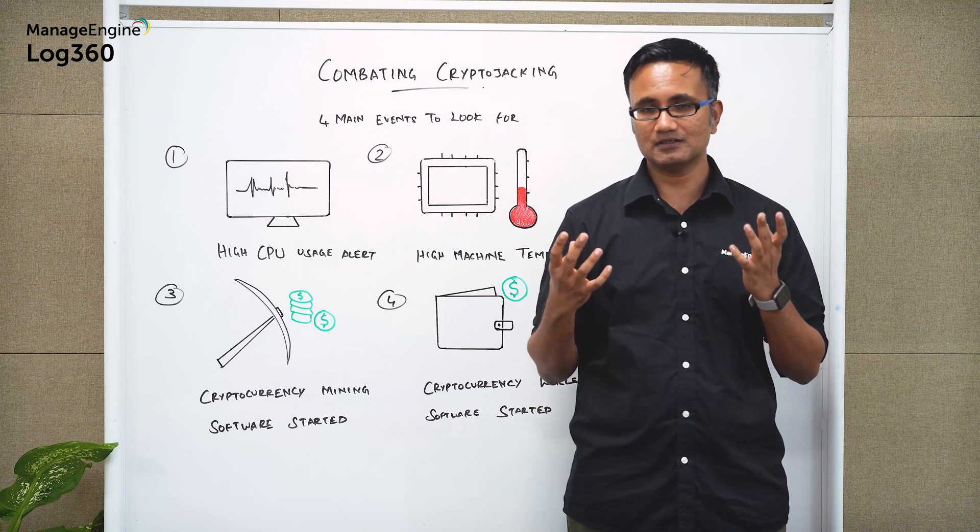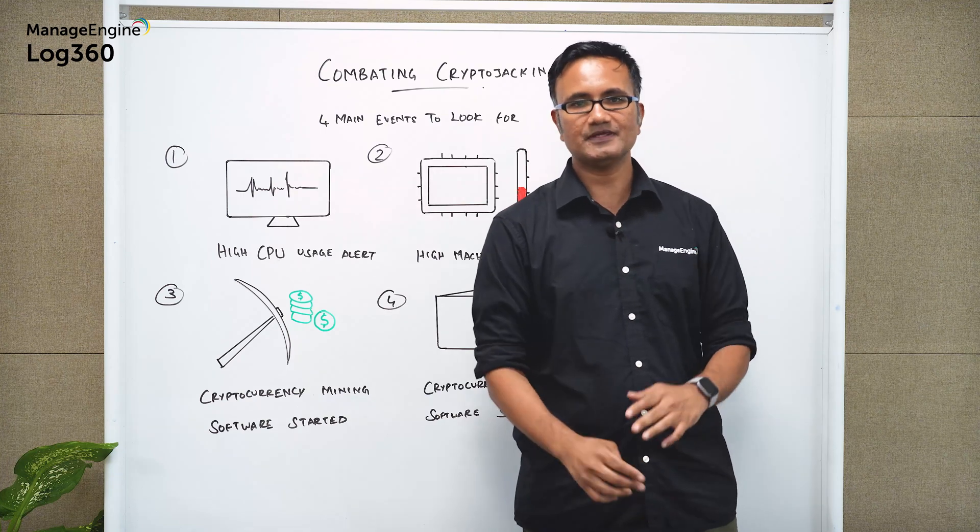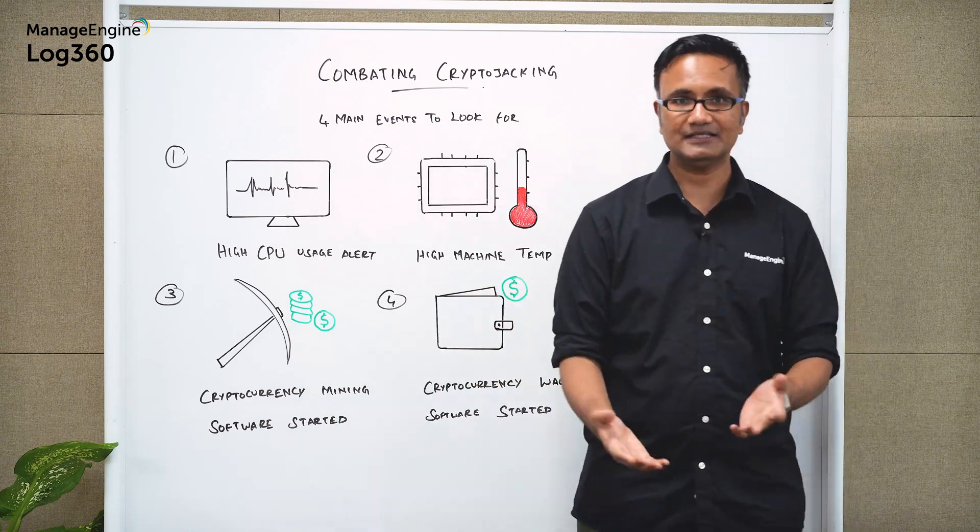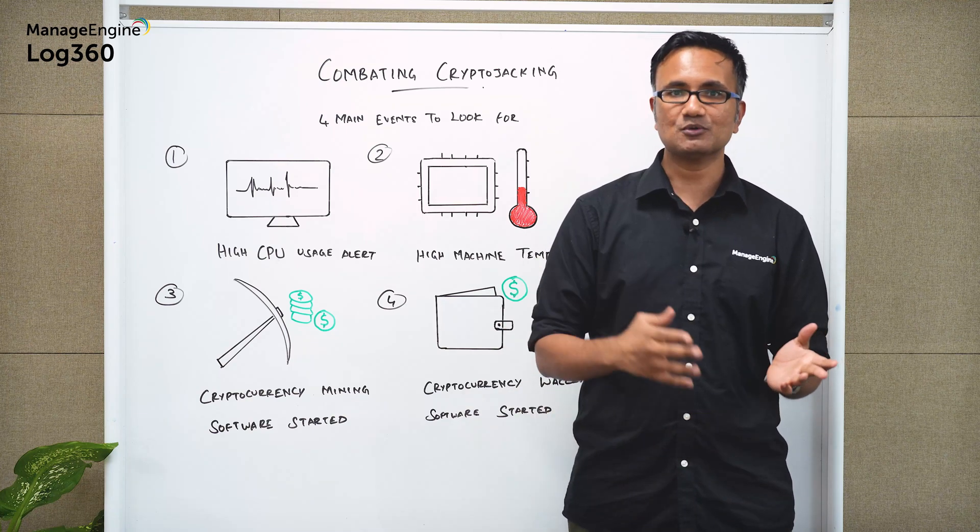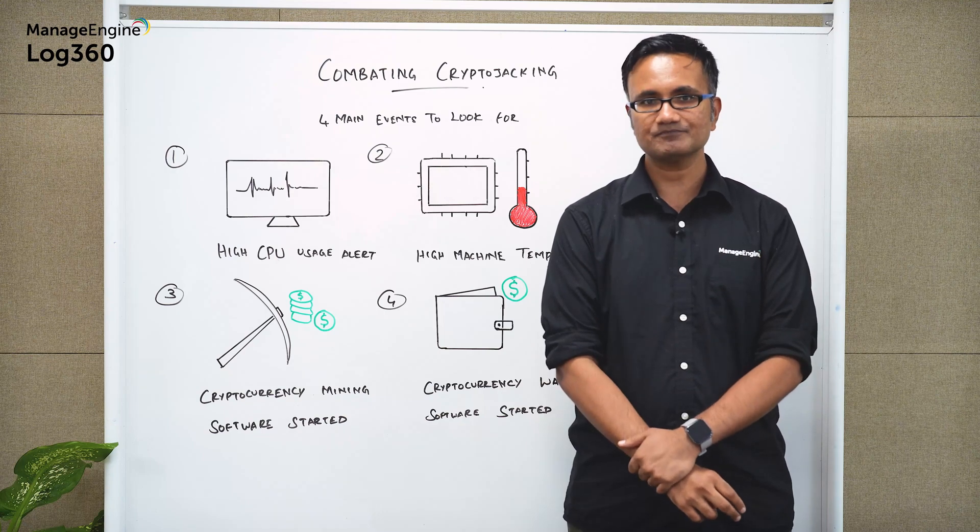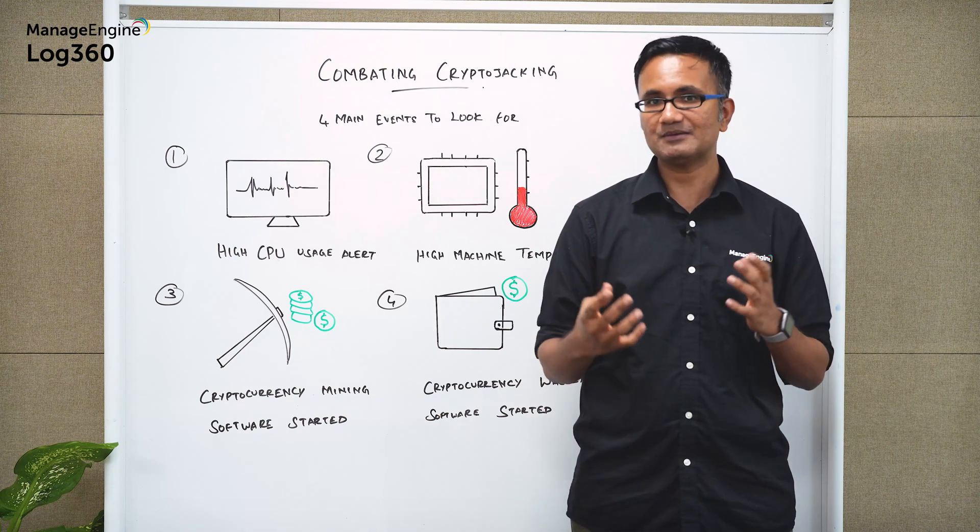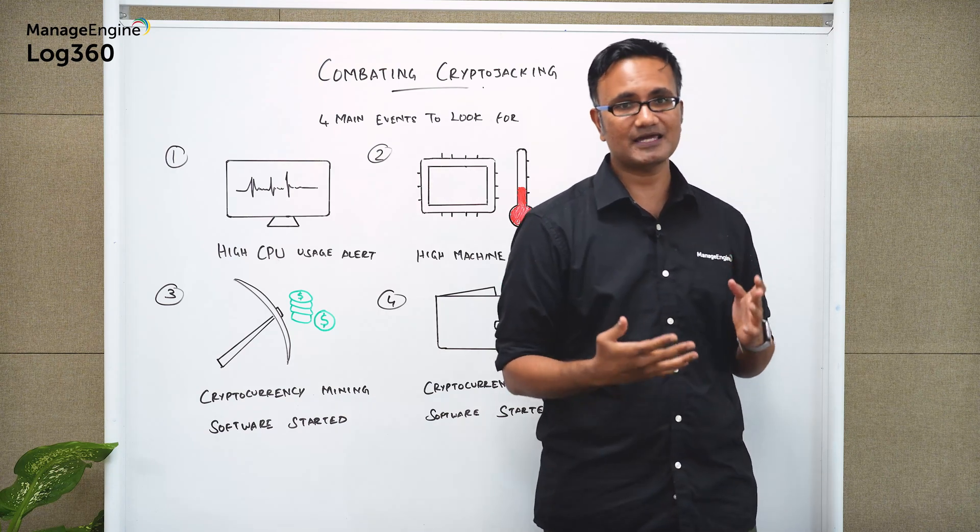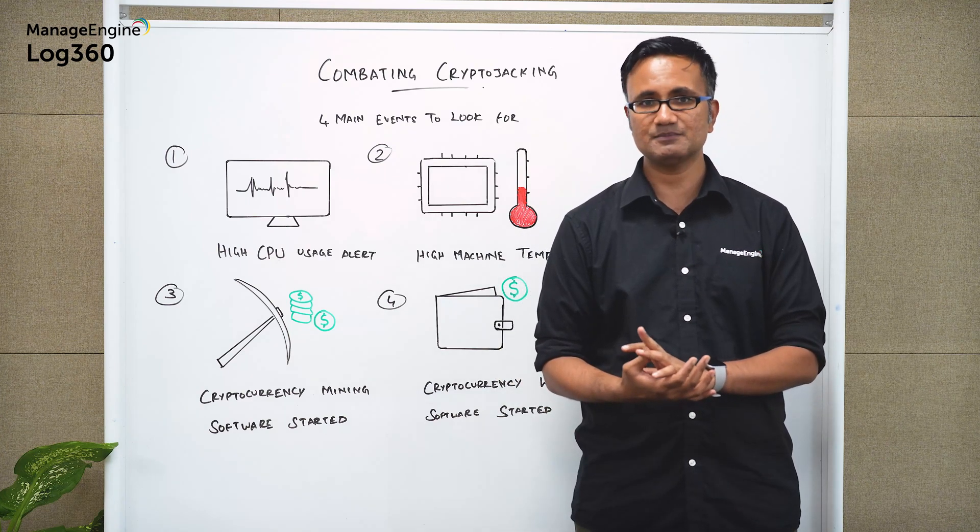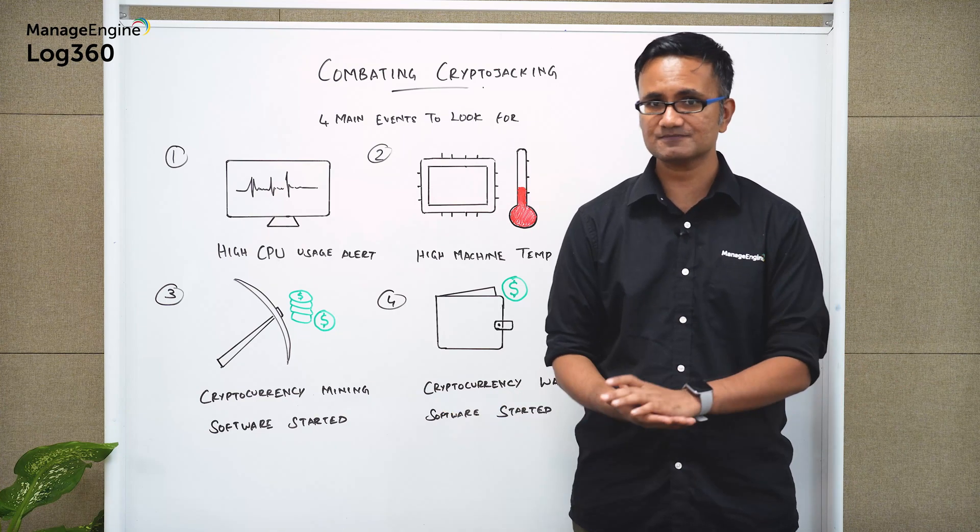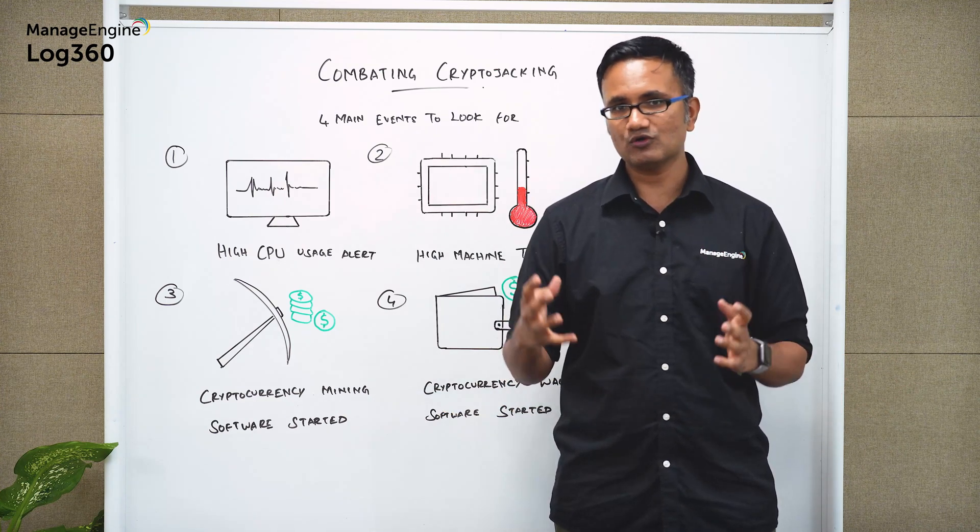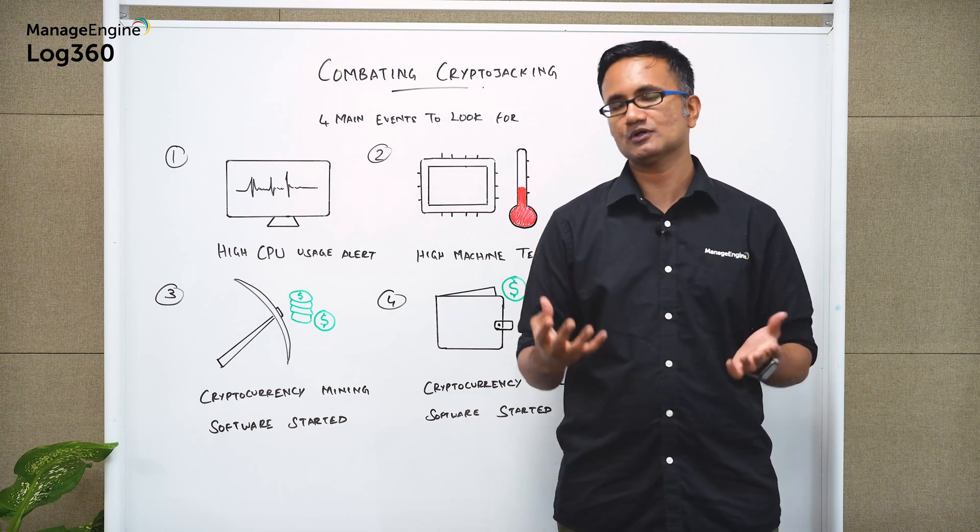So that is what cryptocurrency is and then crypto jacking is an illegal form of crypto mining. Now what is crypto mining? Crypto mining is the act of generating cryptocurrency using computing power. Now computing power can be in different forms. It can be resources, it can be CPUs, it can be GPUs and so on. It can even be your desktops and laptops and a crypto miner will use all of these resources to mine cryptocurrency.